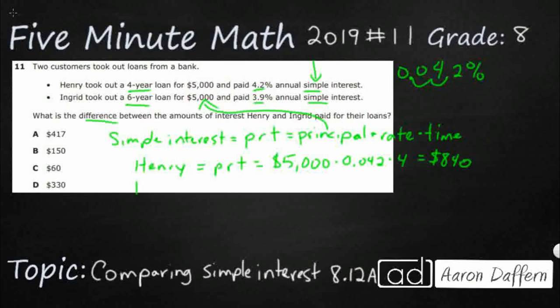Now let's see what we have for Ingrid. Ingrid uses PRT as well — same formula — also starting with a principle of $5,000. Her rate is 3.9%, so we turn that into a decimal by moving it over twice: 0.039. Her time length is different — she's got 6 years.